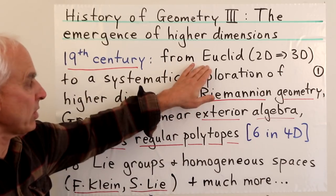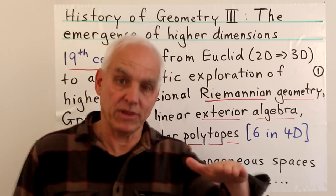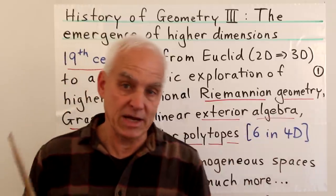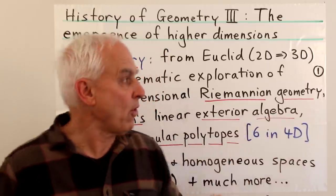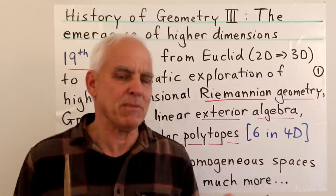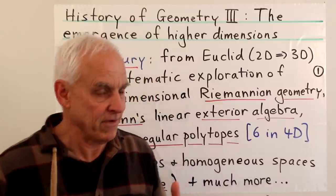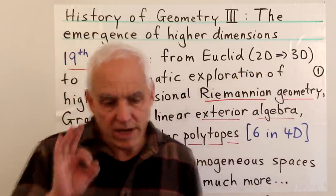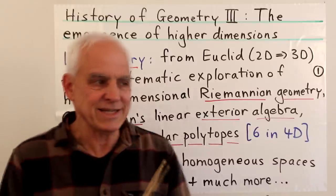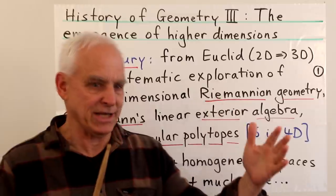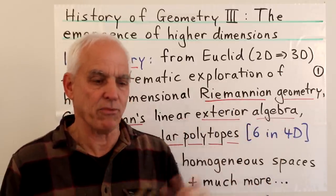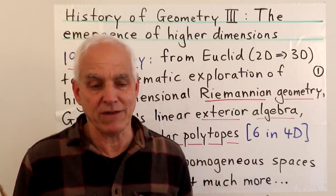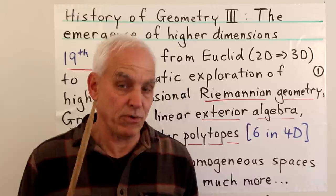Euclid's Elements is of course based starting with two-dimensional planar geometry, but in the later books he does move up to 3D geometry, although that treatment of 3D is much weaker than the two-dimensional version, and correspondingly has seen a lot less development. So already from the Euclidean point of view, we see that there is a big jump from 2D to 3D — it's not so easy at all to bridge that. In fact, even now, most students of mathematics at the undergraduate level have a pretty thin understanding of three-dimensional geometry.